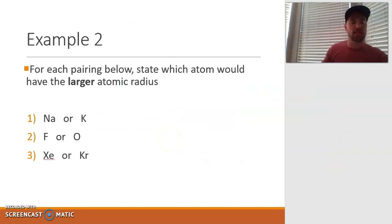Alright, let's do some real quick practice with examples two and three. For example two, I'm showing a pairing of two elements in each question. State which atom would have the larger atomic radius. If we look at sodium versus potassium, potassium would have the larger, because potassium is further down the group. Let's locate fluorine and oxygen. Fluorine and oxygen are in the same period. Oxygen is more to the left, so oxygen would be expected to have the higher atomic size. Finally, if we look at xenon versus krypton, xenon is further down the group, and therefore it will have a larger size.